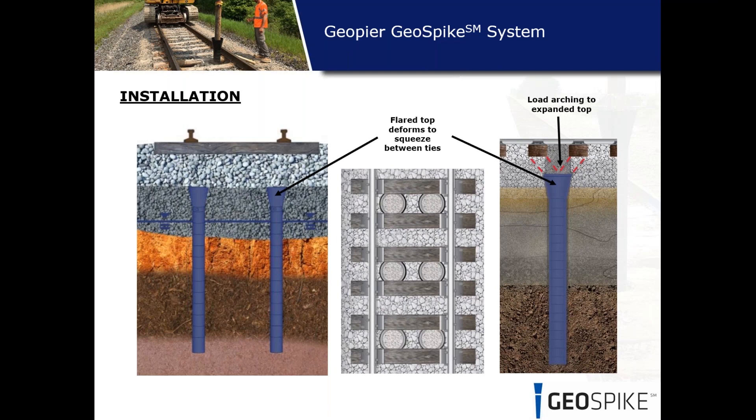The second reason the GeoSpike is set down 12 inches is for efficient load arching through the ballast section to the top of the expanded GeoSpike. Soil arching occurs as a function of the phi angle of soils, and in granular soils setting the GeoSpike top down about 12 inches gives good efficient load transfer from the train through the rail, tie, and ballast down to the GeoSpike top and into the stronger subgrade materials.